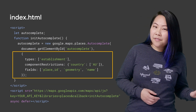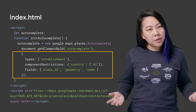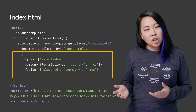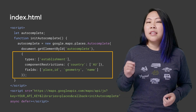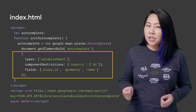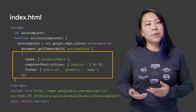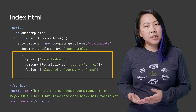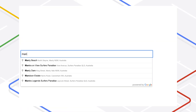Then specify the type of place you expect your user to search for, and add location biasing by country and geographic coordinates to improve the predictions. This is also a good time to specify what place detail fields you will need about the selected place, so that you only pay for the data you will actually use. Now you've got an input field that will display a dropdown of predictions as the user types.